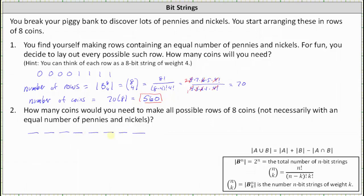So if we think of this as an eight-bit string, each binary digit must be zero or one. Therefore, if we determine the total number of eight-bit strings, we can determine the total number of rows possible. And then from there, we can multiply by eight to determine the total number of coins. So to determine the total number of eight-bit strings...